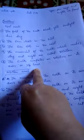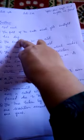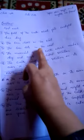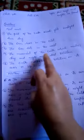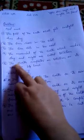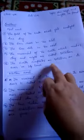To review: the part of the earth which gets sunlight is called day. The sun rises in the east and sets in the west. The movement of the earth which makes day and night is called rotation. The earth completes one rotation on its axis in 24 hours.